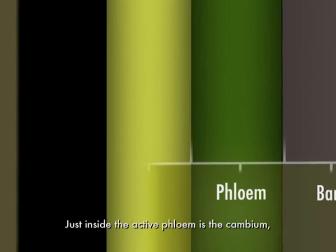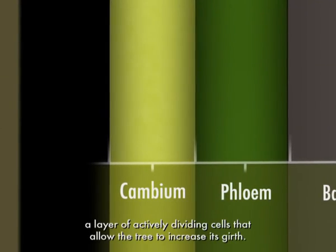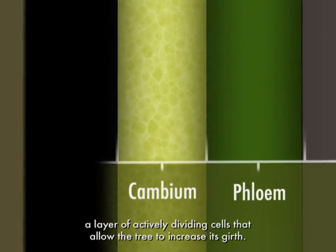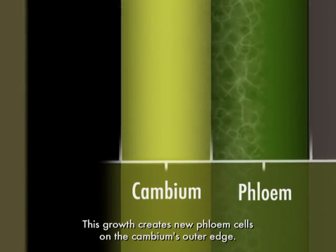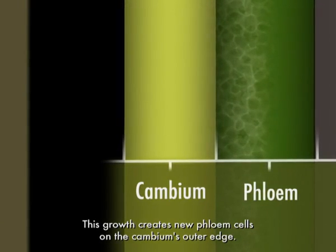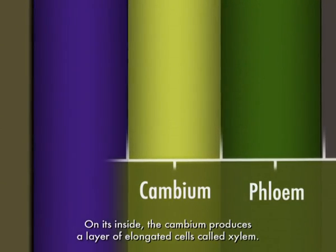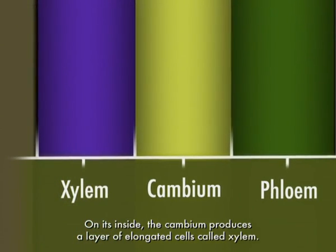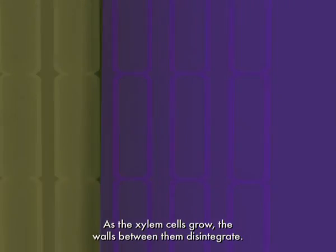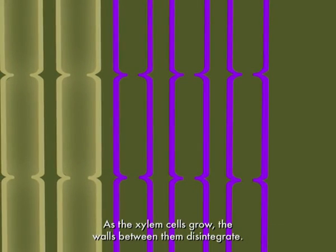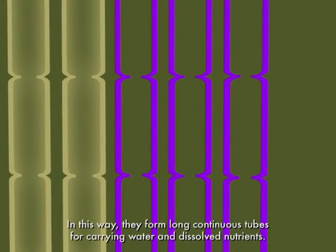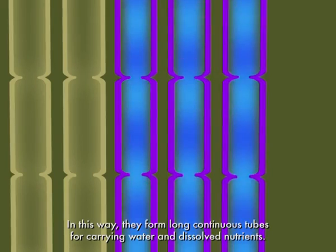Just inside the active phloem is the cambium, a layer of actively dividing cells that allow the tree to increase its girth. This growth creates new phloem cells on the cambium's outer edge. On its inside, the cambium produces a layer of elongated cells called xylem. As the xylem cells grow, the walls between them disintegrate. Their side walls become thicker and stronger. In this way, they form long, continuous tubes for carrying water and dissolved nutrients.